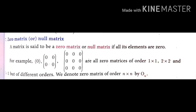The seventh type is the zero matrix or null matrix. A matrix is called a zero matrix or null matrix if all its elements are zero.